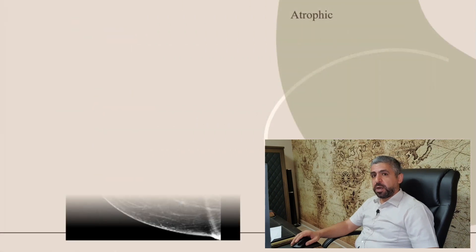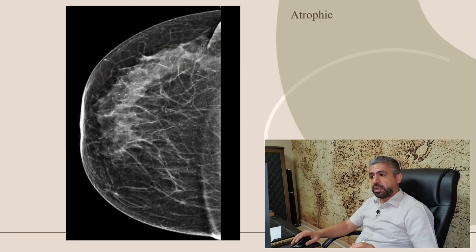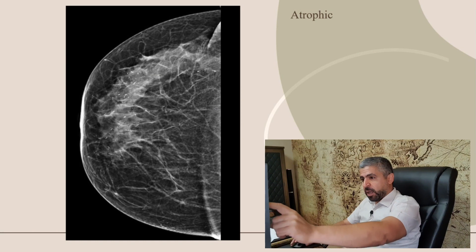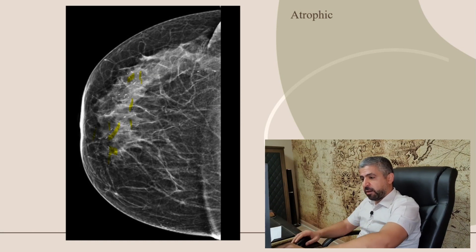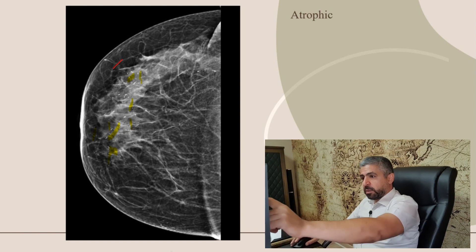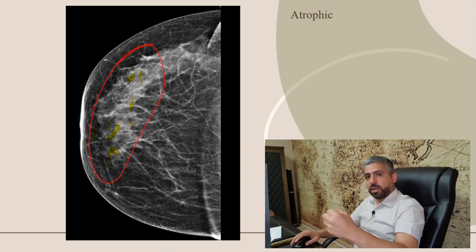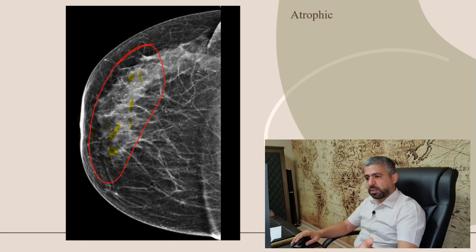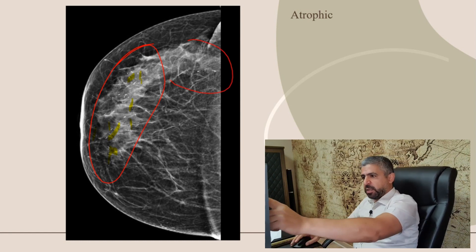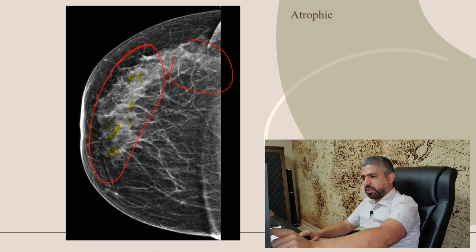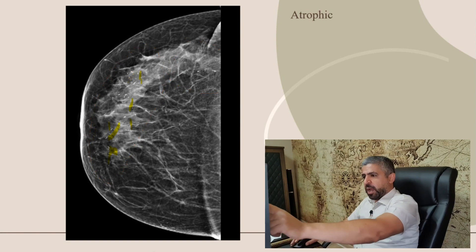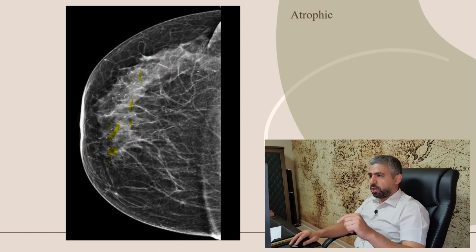The second cause is due to glandular tissue atrophy. You can see here, for example, these scattered microcalcifications here and there — they are all due to atrophic glandular tissue. It's just due to age. If you do an ultrasound or even a biopsy, there will be nothing there. It's just calcifications due to atrophy of the glandular tissue.